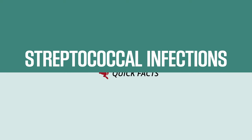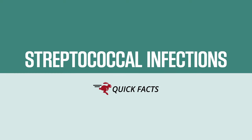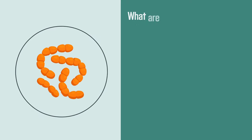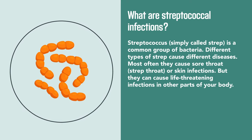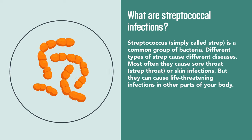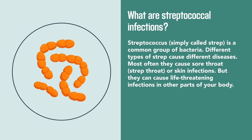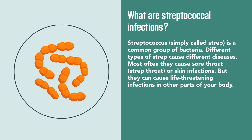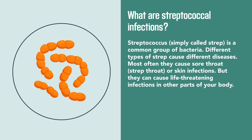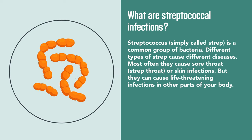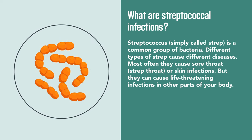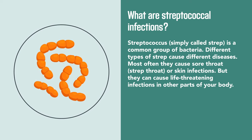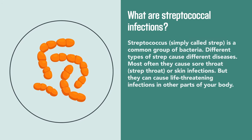Streptococcal infections: the quick facts. What are streptococcal infections? Streptococcus, simply called strep, is a common group of bacteria. Different types of strep cause different diseases. Most often, they cause sore throat or skin infections, but they can cause life-threatening infections in other parts of your body.